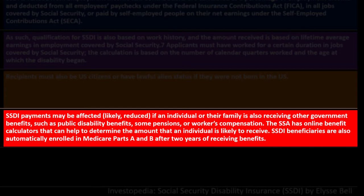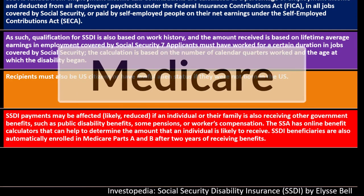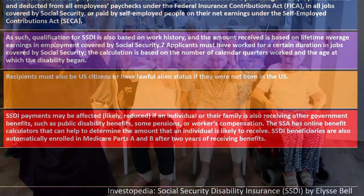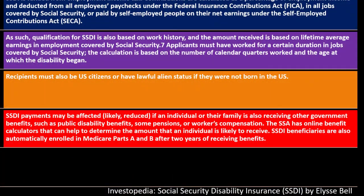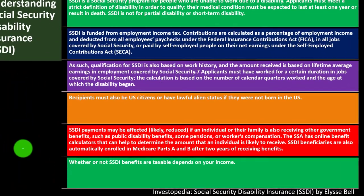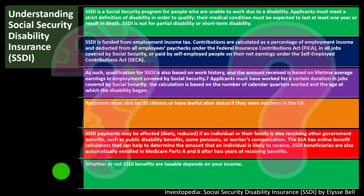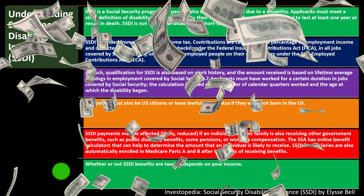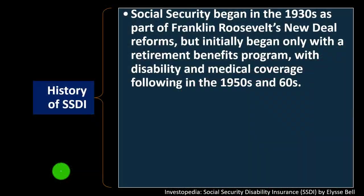SSDI beneficiaries are automatically enrolled in Medicare Parts A and B after two years of receiving benefits. For disabled individuals, Medicare can kick in before the normal age of 65. Whether SSDI benefits are taxable depends on your income — if you're below a certain threshold, the benefits may not be taxable.